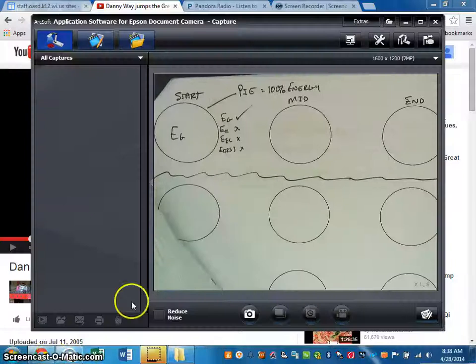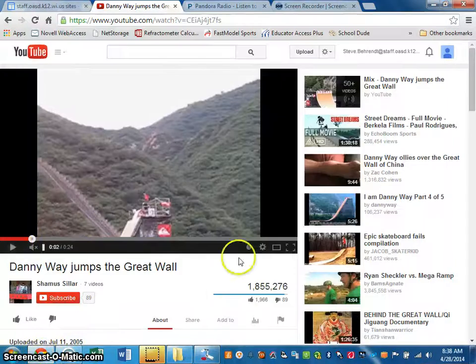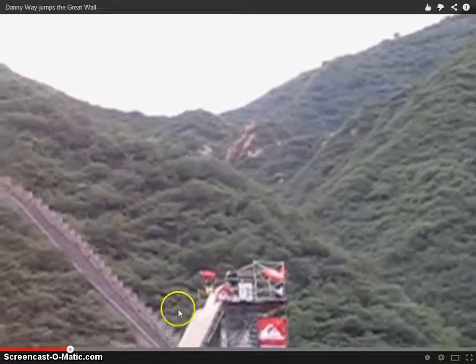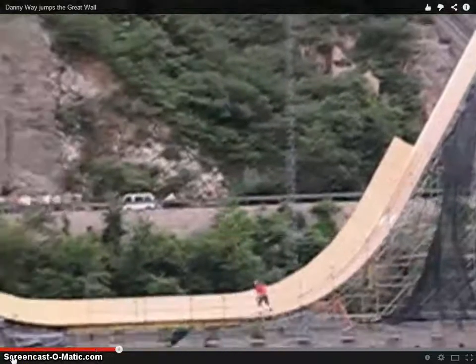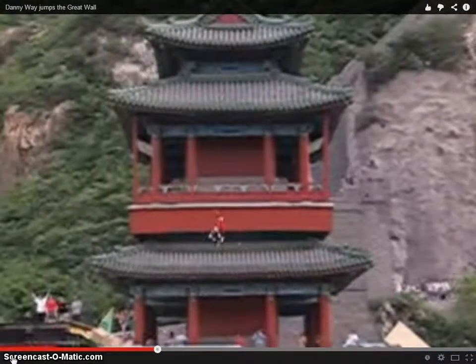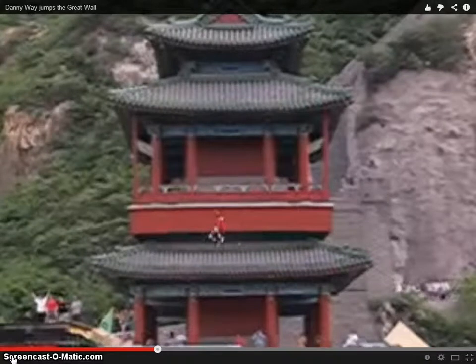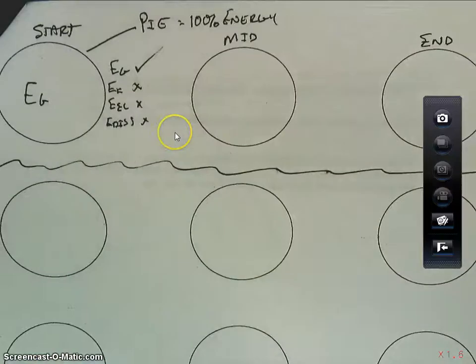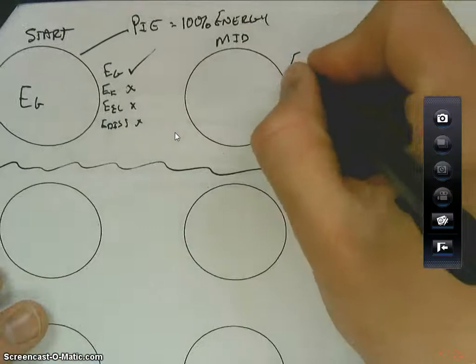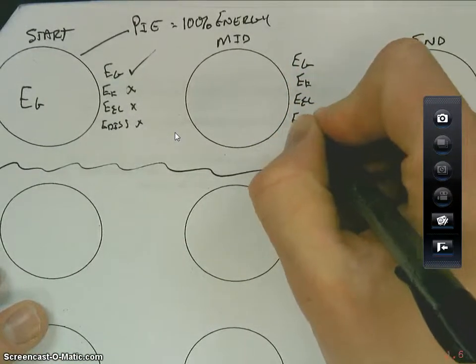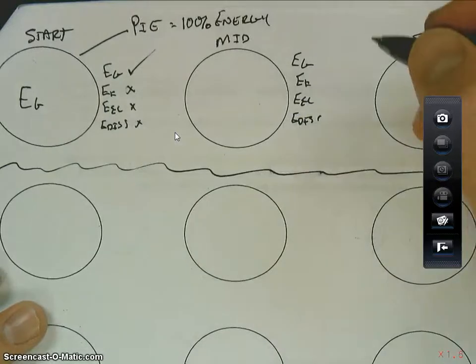Now we're going to go to the middle. Again, right here, he's all gravitational potential energy. Now he's all kinetic. Right here in the middle, we know he's a distance off of the ground, and he's moving at some speed. So we'll go back to our pie chart, and we'll go through our checklist. We'll figure out what type of energy is present, and we'll approximate what's going on here. Again, I go through my same checklist, EG, EK, EEL, and EDIS. And going through, again, Danny Way was in the middle.